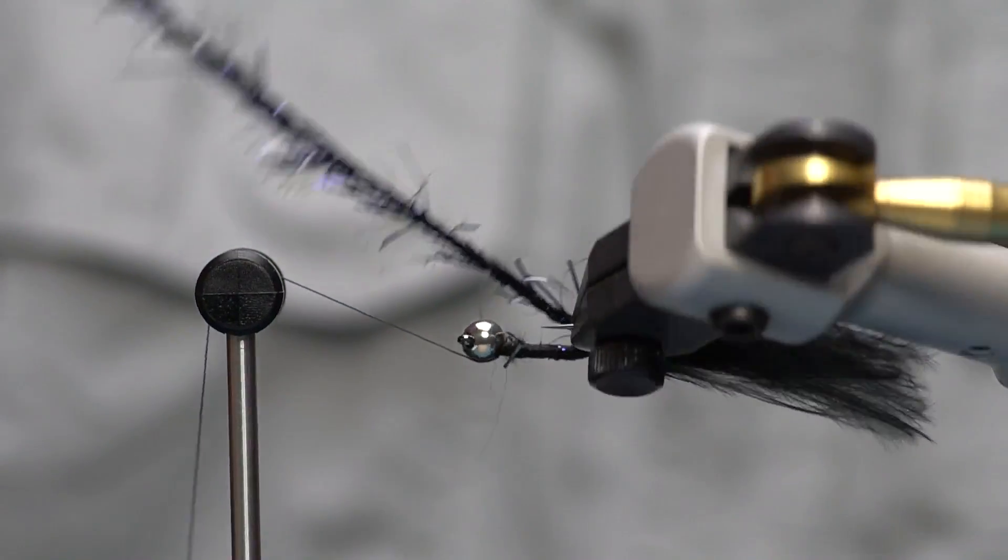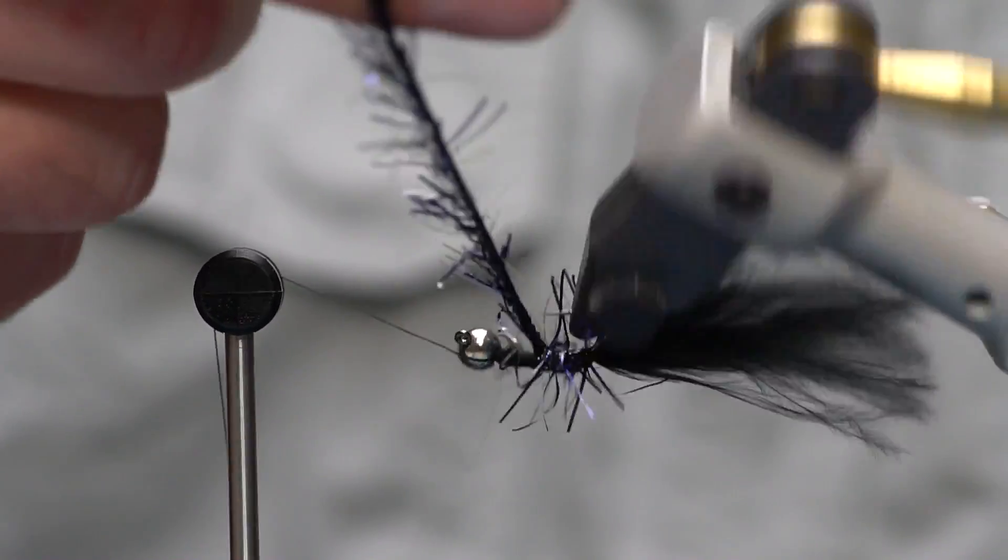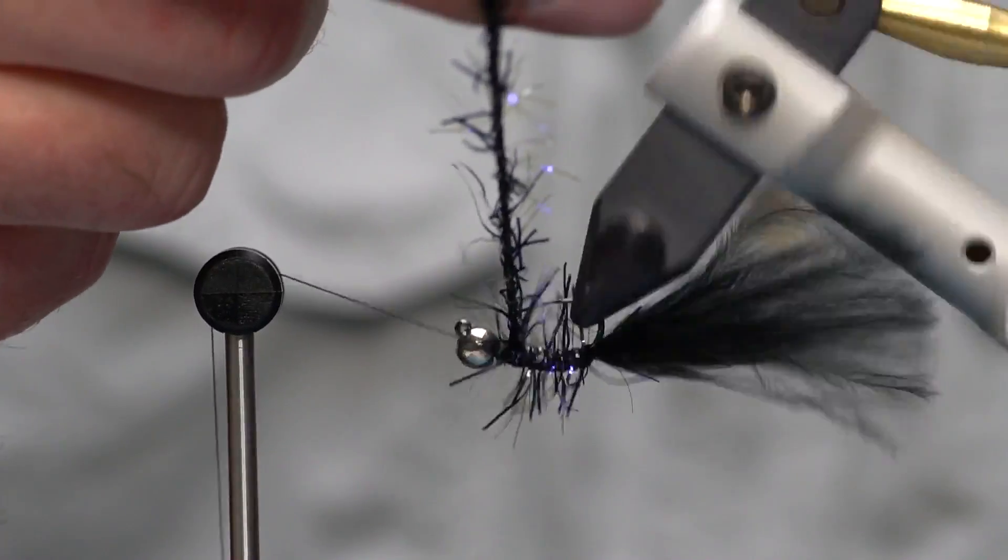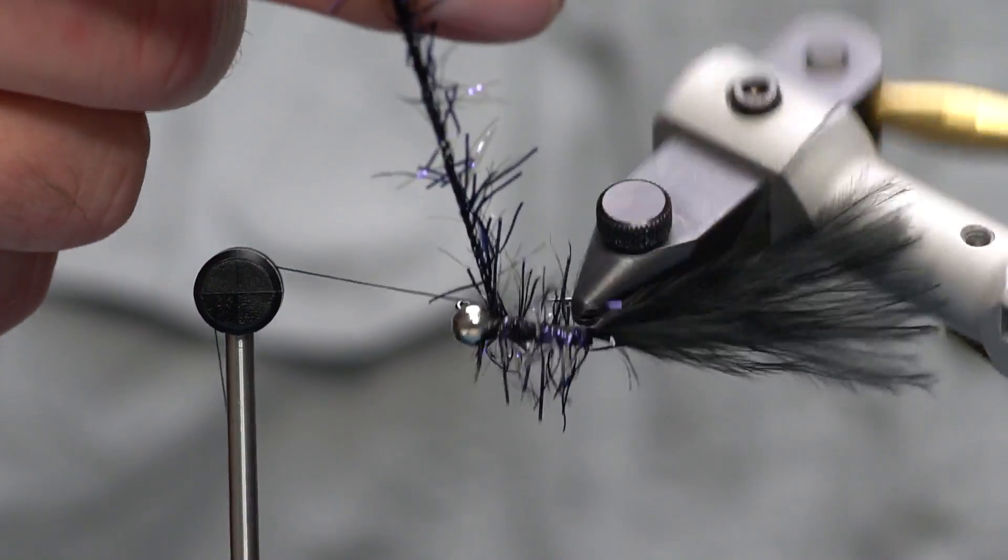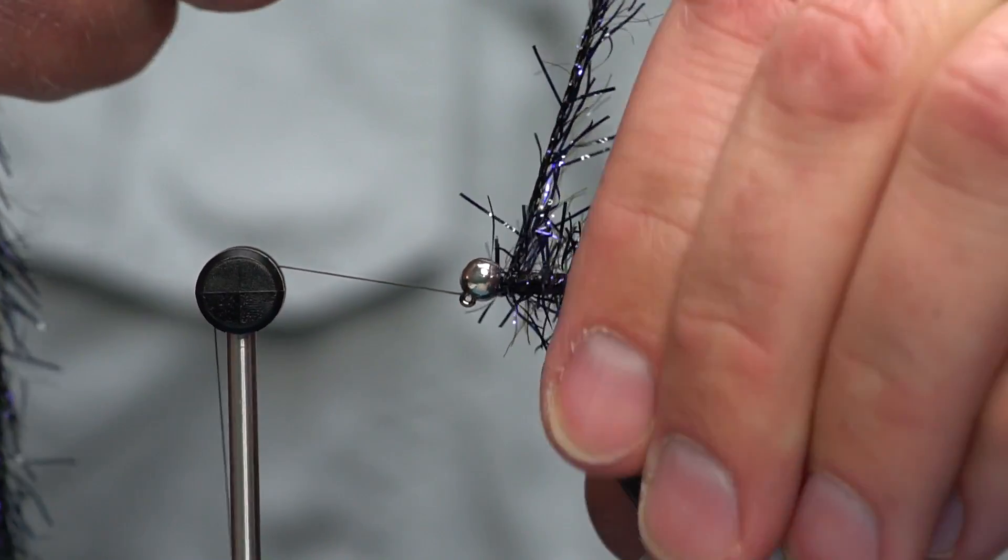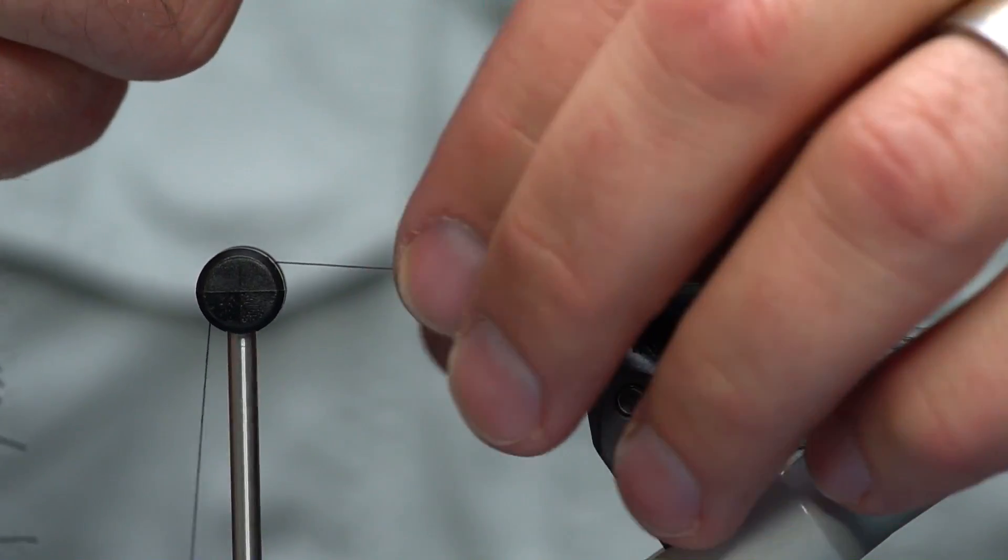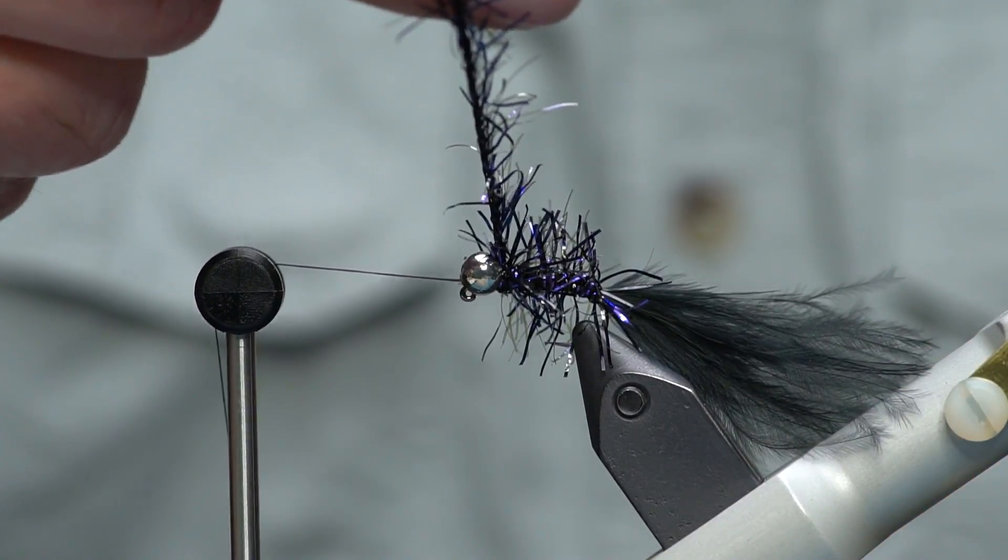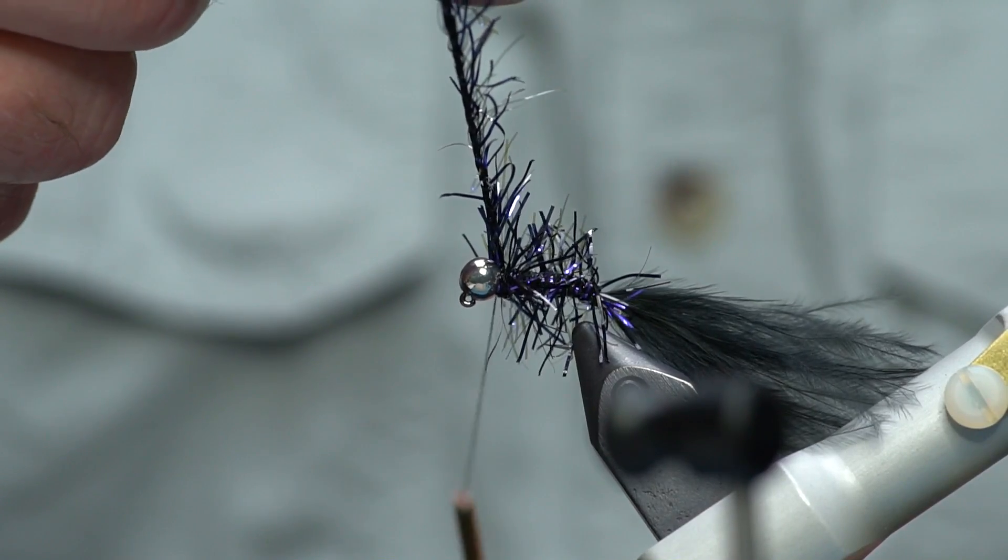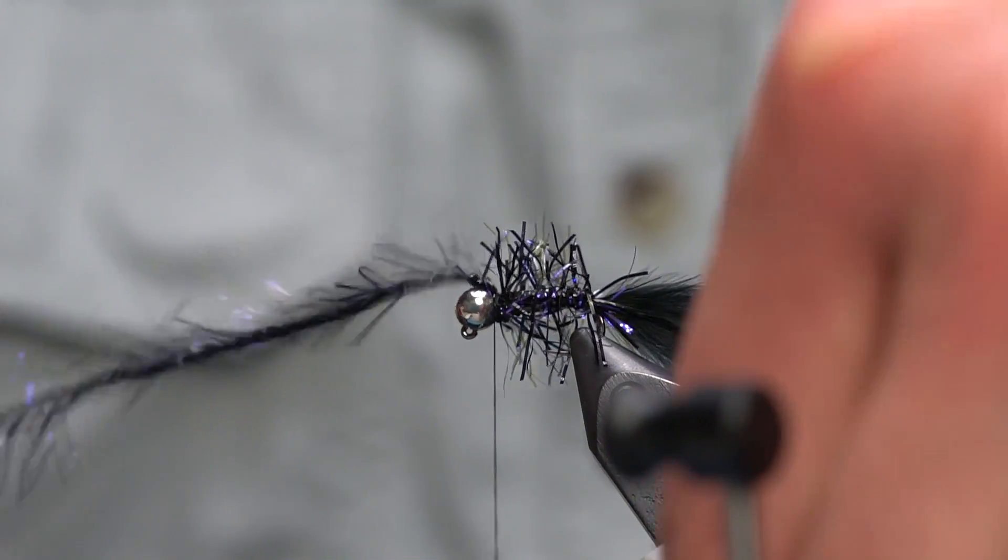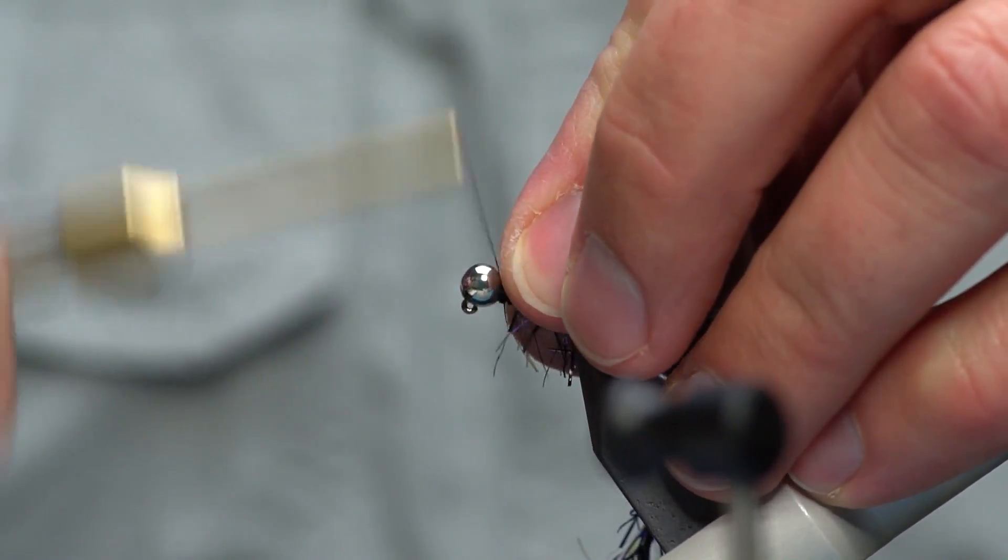Next up we're just going to wrap the chenille through the body. If you're really OCD you could probably take a wrap and stroke the fibers back, but I'm not that worried about it. I just wrap them until I get up here to the bead and I'm going to do an extra couple of wraps right at the bead to lock that bead in place. I've got a lot of tension, you can see I'm flexing the hook, so I'm wrapping it tight. That makes for a durable fly. I'm going to capture the chenille with the thread.